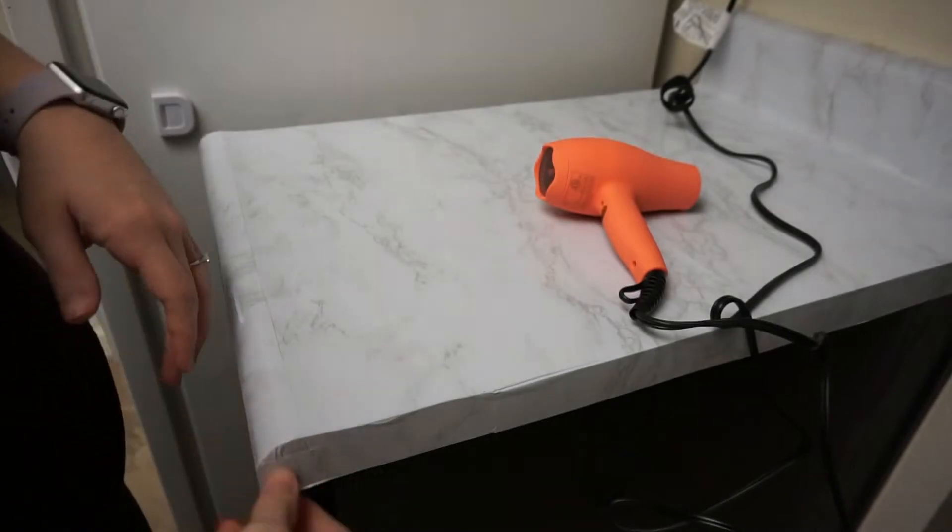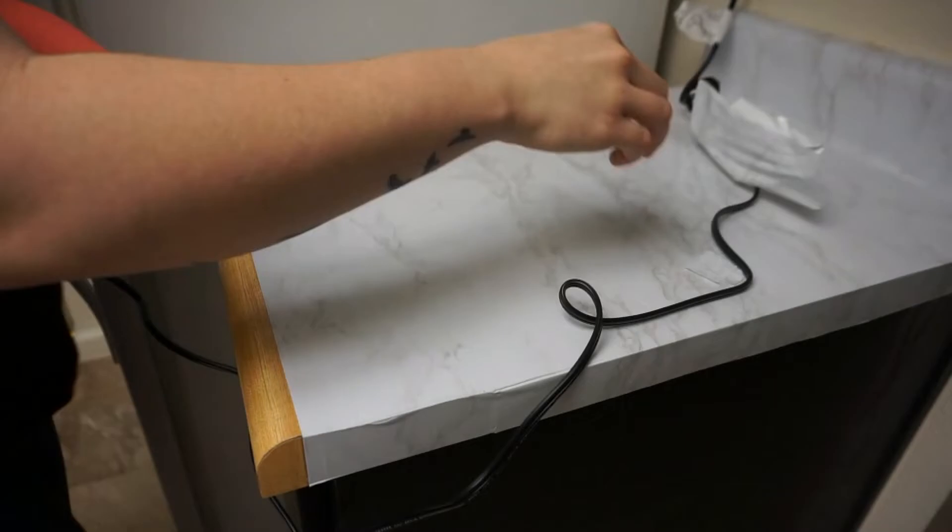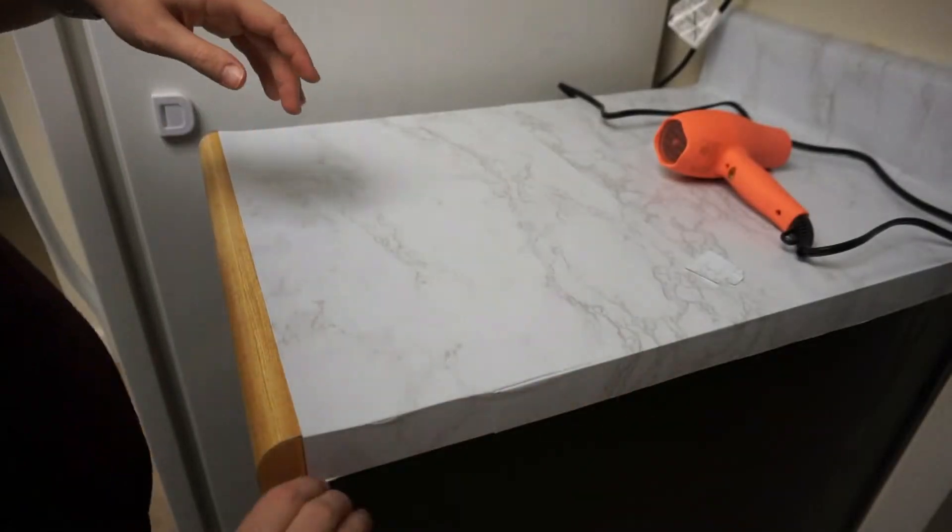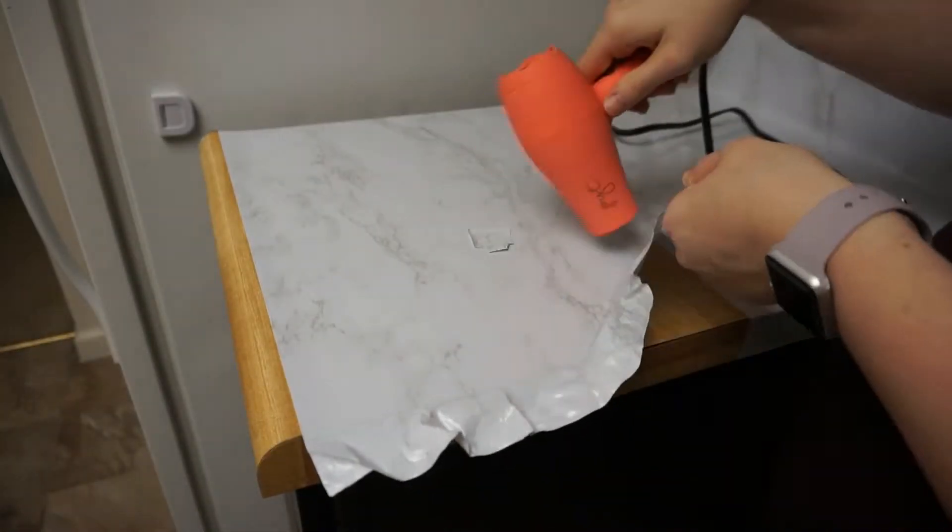Alright, so here I'm just taking a blow dryer that I have to soften up the adhesive, which at first I believed was the right thing to do. I thought it was going well with this section of the countertop, and then I slowly learned when I do another section...